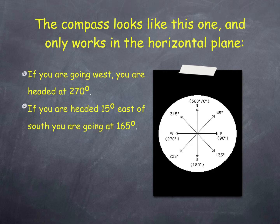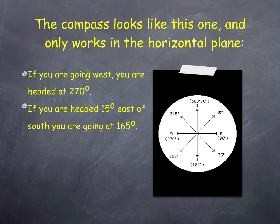We're not always going directly on these compass points — sometimes we're headed another way and we can describe it based on how far away we are. If I'm going 15 degrees east of south, I'm going at 165. South was 180; east of south means smaller numbers, so 180 minus 15 equals 165. If I'm going straight east at 90, and I'm 10 degrees north of east, that's 80. Ten degrees south of east is 100. Ten degrees north of west is 280. Ten degrees south of west starts at 270 and goes down to 260.